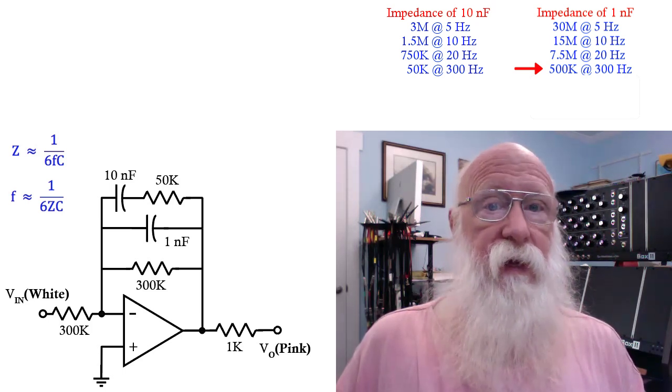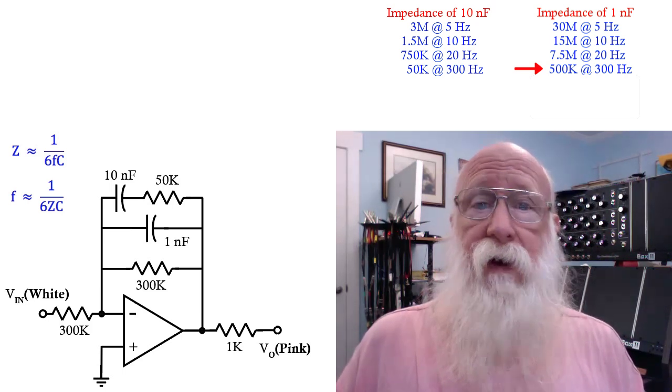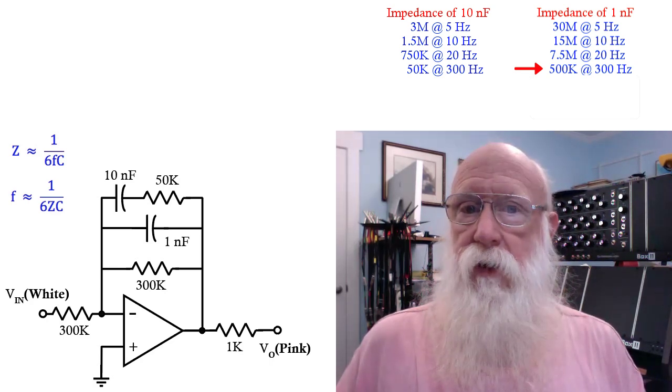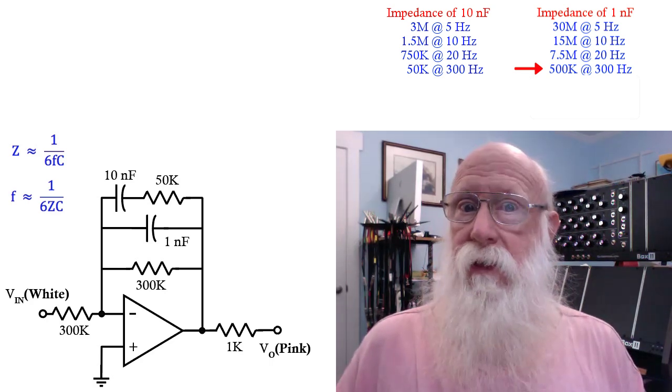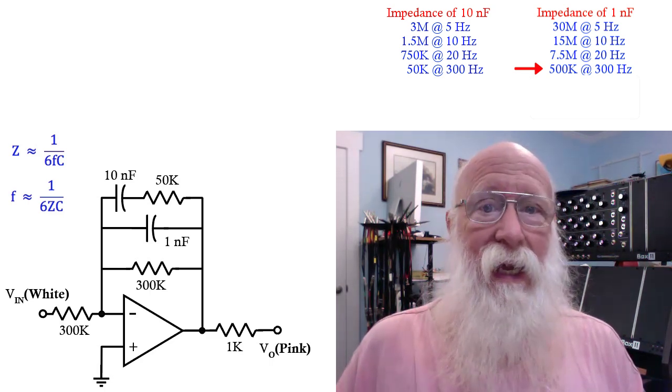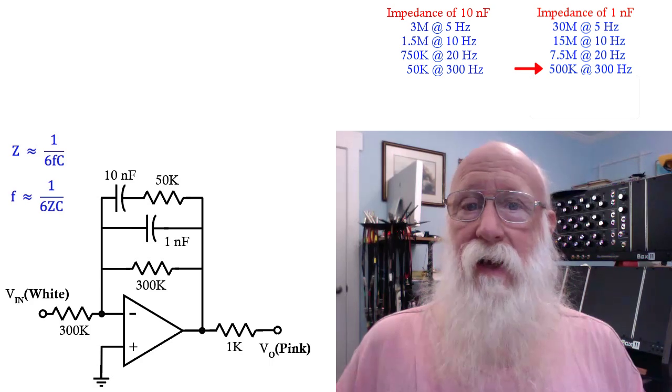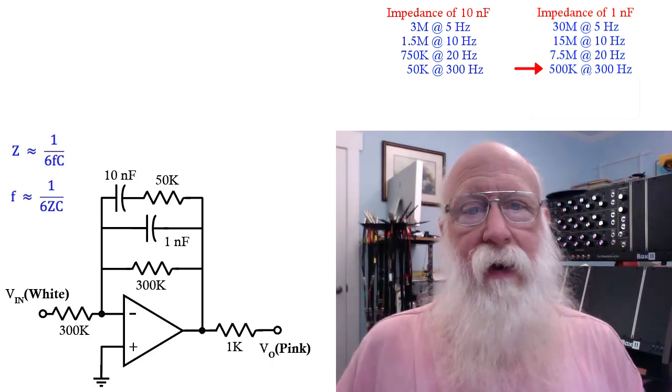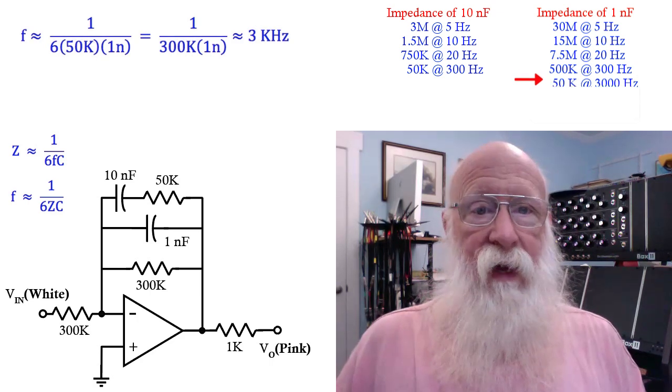Since the 10 nanofarad 50K branch is now fairly close to 50K, we then need to ask ourselves the question, at what frequency does the 1 nanofarad branch start getting close to 50K, and thus will begin to take over the response of this circuit. And if you calculate that out, you come out with 3000 hertz.